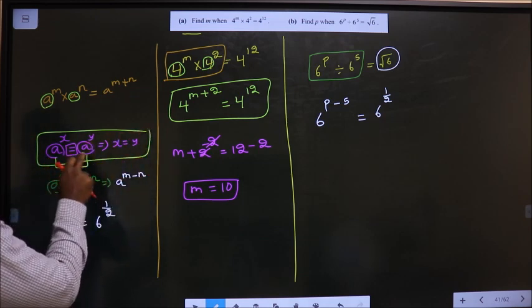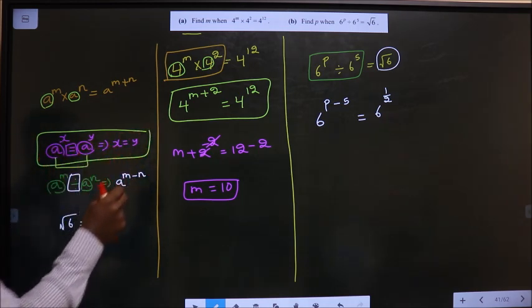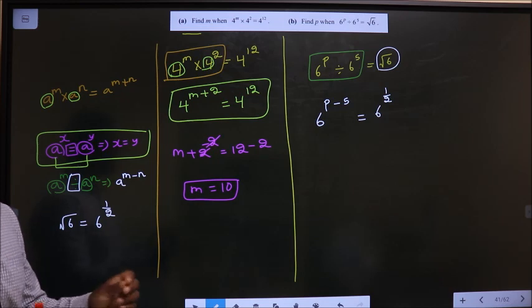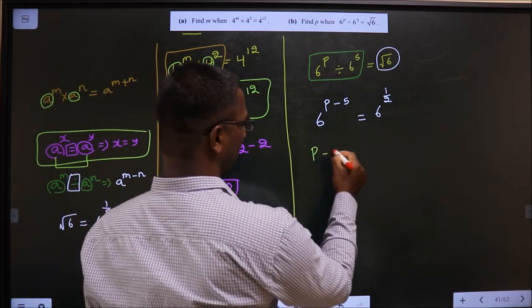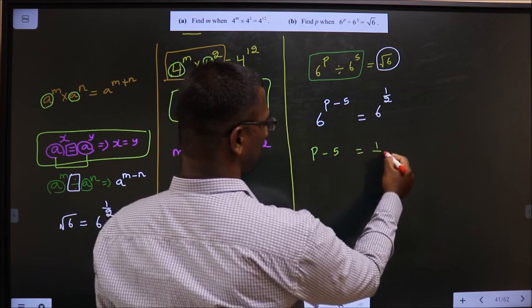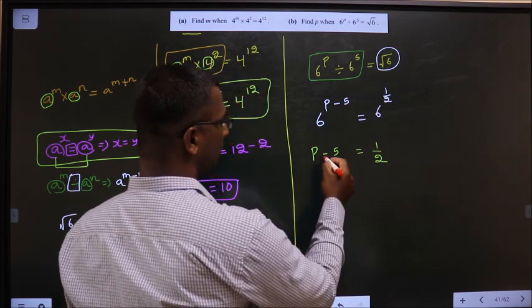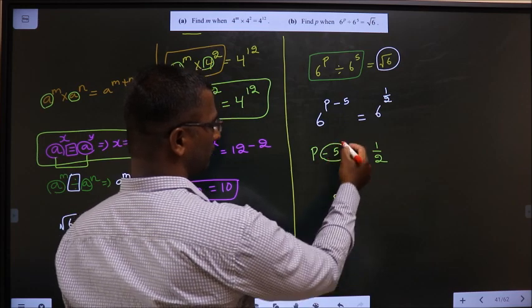Bases are same with an equal sign, so equate the powers. The powers should be equal: p - 5 = 1/2. Now to get p, we should get rid of -5.